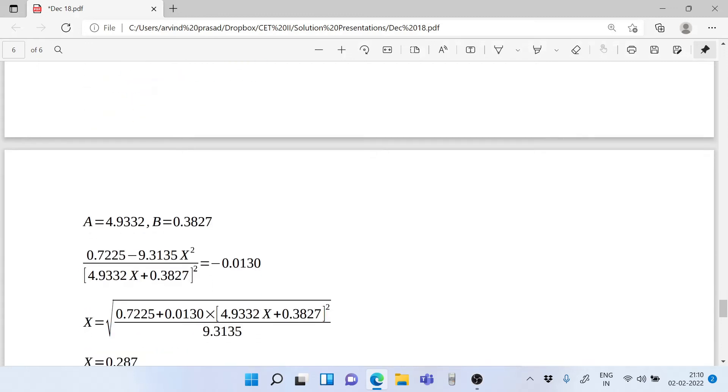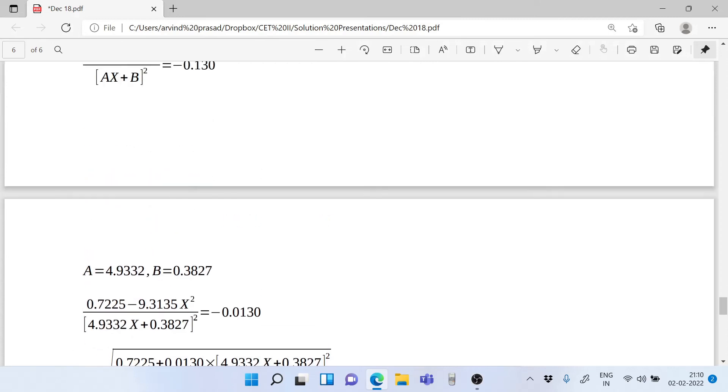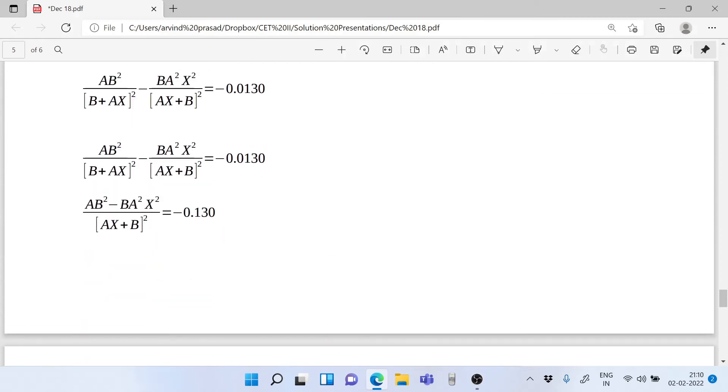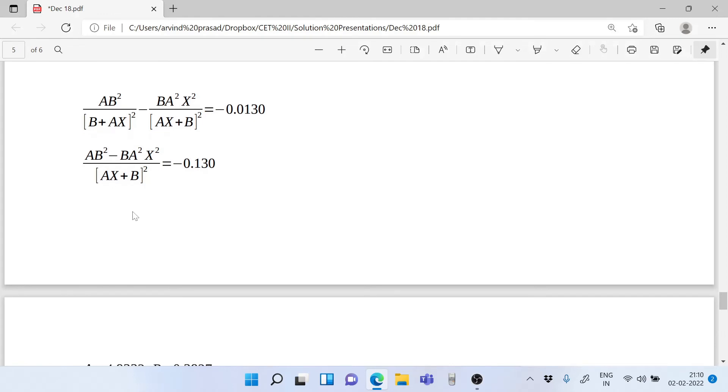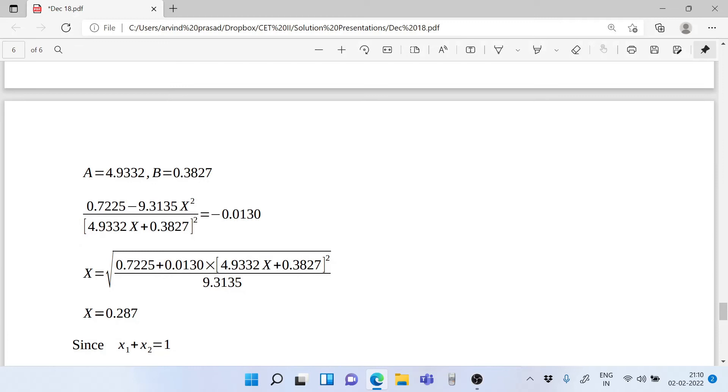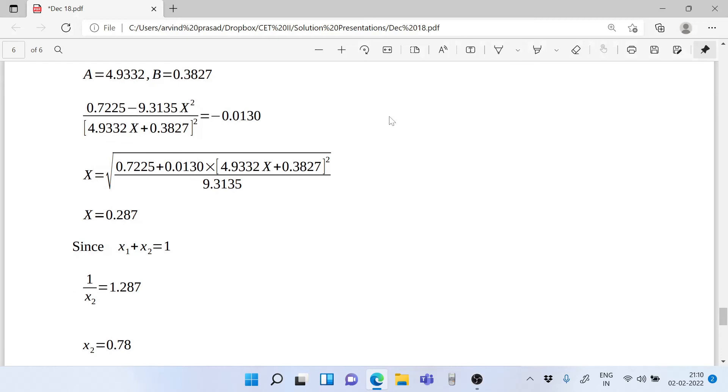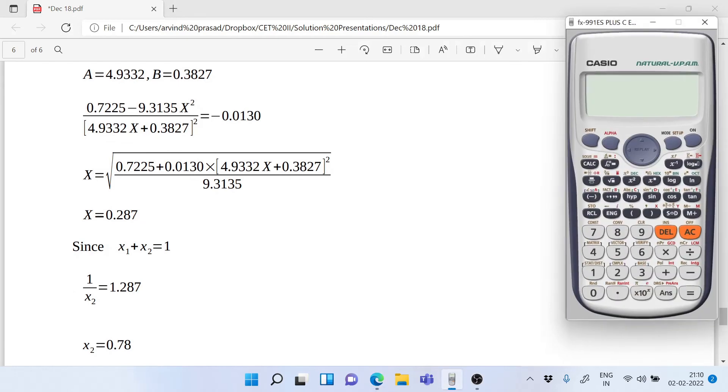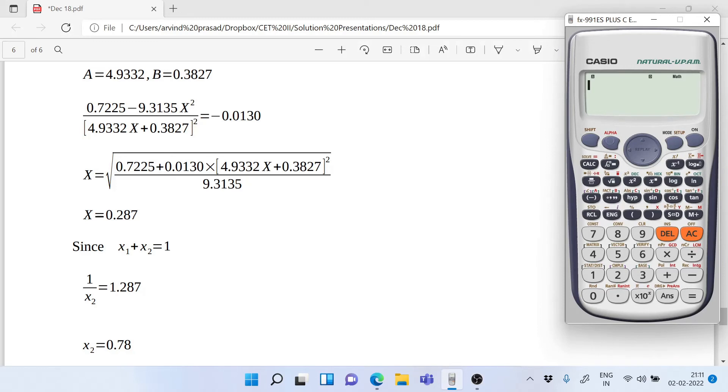Just to remind you, these are the values of A and B, and you replace the values of A and B in this equation. Now that's the trick you do to solve in calculator. Don't try to simplify it beyond this. Just put the values and get the equation in this form, and then rewrite the equation in this form where you have x here and x here. And the calculator does it with a lot of ease.